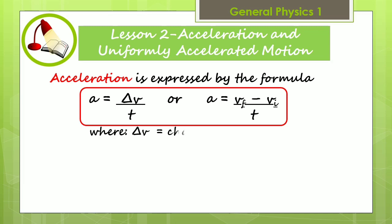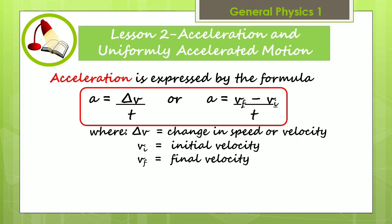Acceleration is expressed by the formula where delta v is the change in speed or velocity, v sub i is the initial velocity, v sub f is the final velocity, d is the distance covered, and t is the time of travel.